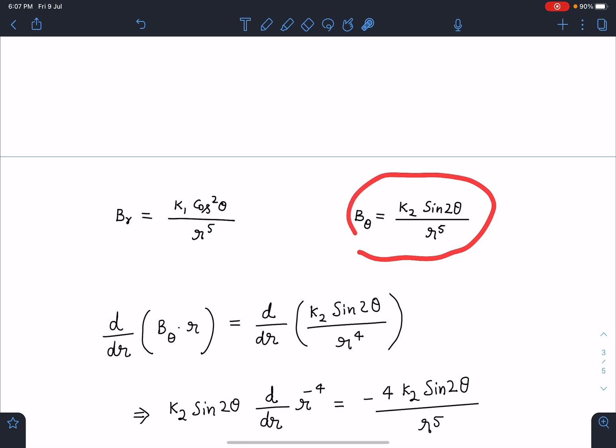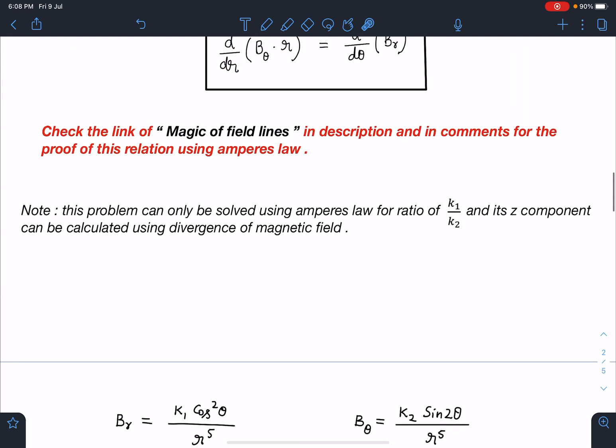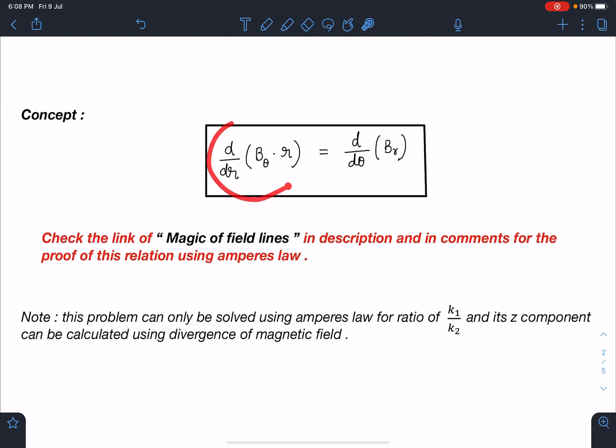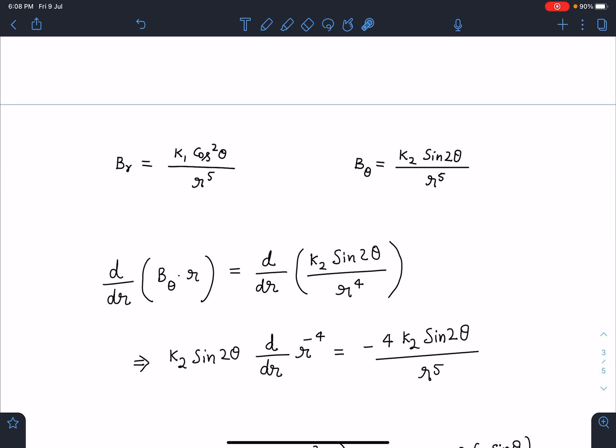All right. Now B_r is given to us as k1 cos squared theta by r to the power 5, and B_theta is given as k2 sin 2 theta by r to the power 5. So let's calculate d by dr of (B_theta r), because d by dr of (B_theta r) equals d by d theta of B_r. That's what we have got from Ampere's law. So let's calculate B_theta r here. B_theta value when I substitute - k2 sin 2 theta by r, and r to the power 5 will become r to the power 4.